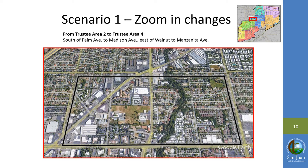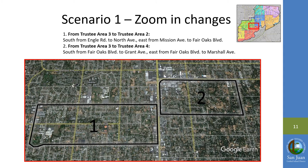Here you see the shift from Area 2 to Area 4, which includes the area going south of Palm Avenue to Madison Avenue and east from Walnut to Manzanita Avenue. Next, we see the area shifted from Area 3 to Areas 2 and 4. The first change includes the area going south from Engel Road to North Avenue and east from Mission Avenue to Fair Oaks Boulevard. The second change includes the area going south from Fair Oaks Boulevard to Grant Avenue and east from Fair Oaks Boulevard to Marshall Avenue.